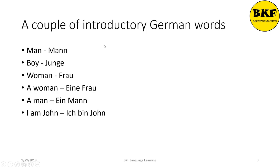A couple of German words. So first is Mann, which is man in German. Boy is Jünger. Woman is Frau. So a woman is eine Frau. A man is ein Mann. So if I want to say 'I am John,' I am going to say ich bin John. Ich means I, bin means am, and John is John.